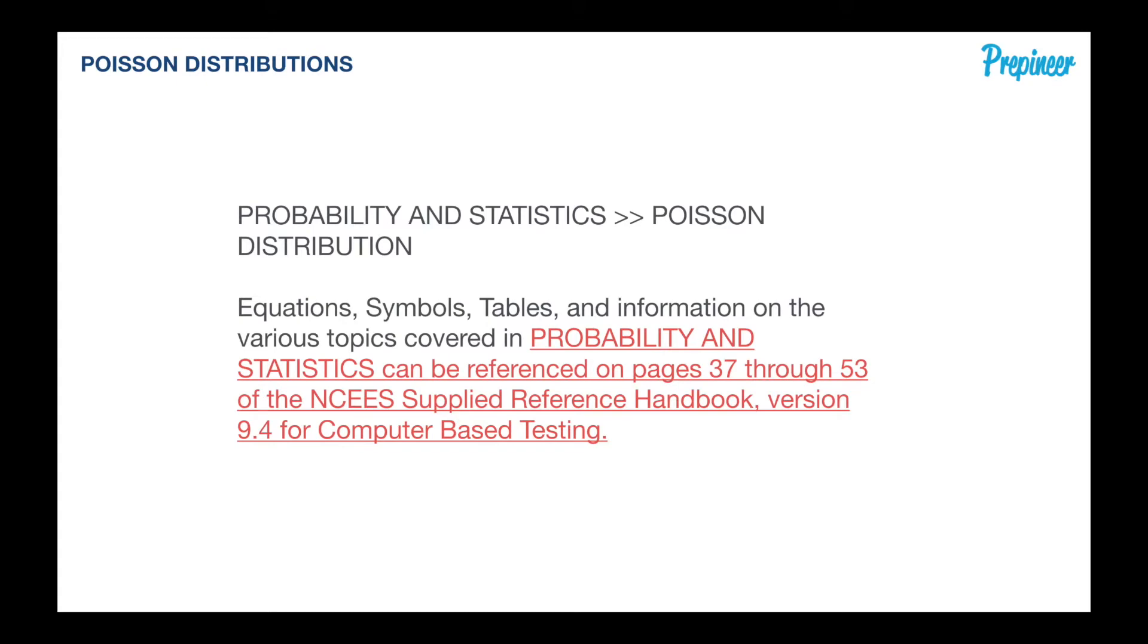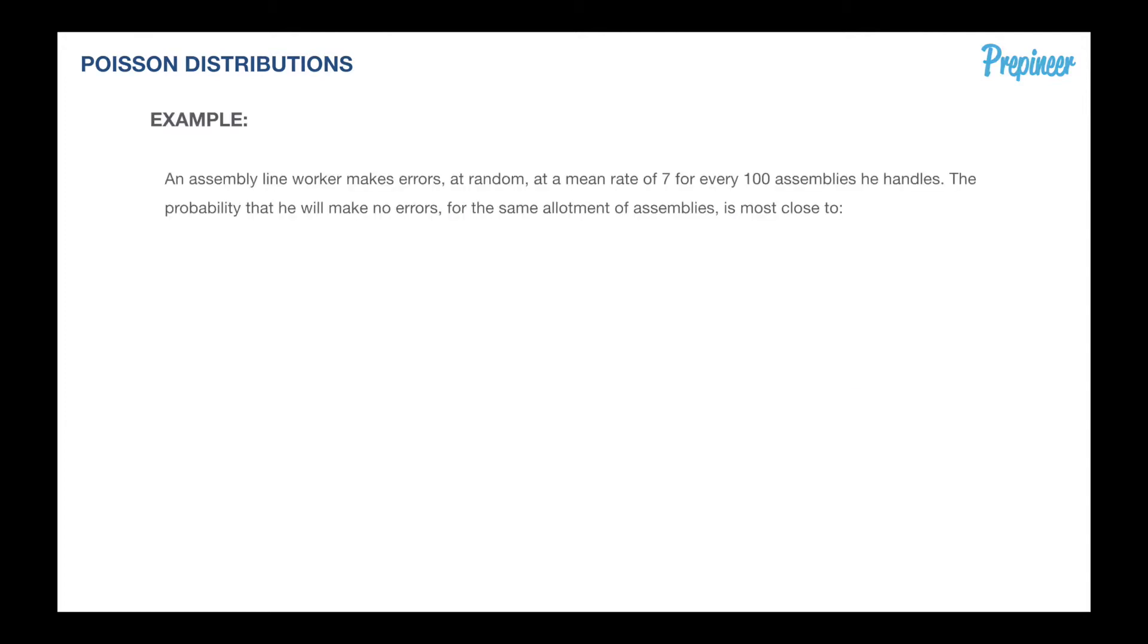Tonight's cram session is on Poisson distributions. Poisson is found in the probability and statistics section of the NCEES reference handbook. I will be showing you specific pages and formulas as we work through this session. I like to get into practical example problems right away, then learn the concepts as we go through.